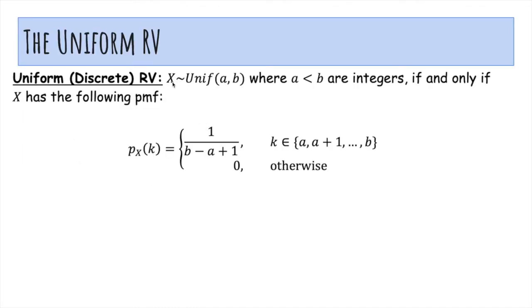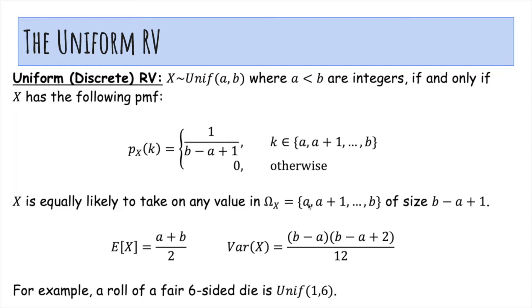So we'll say that X is uniform with parameters a and b, where they're integers, if and only if the probability mass function is like this. X is equally likely to take on any value in a to b, and the number of integers between a and b is actually b minus a plus 1, and that's why it's kind of weird with a plus 1.